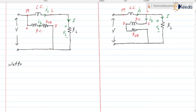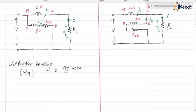The wattmeter reading, that is the measured power Wm, is equal to the voltage across the potential coil multiplied by the current through the current coil. Since the load is resistive, the power factor is unity, so the reading is simply the product of these two quantities — the coil measuring voltage across the load and the coil measuring current through the load.